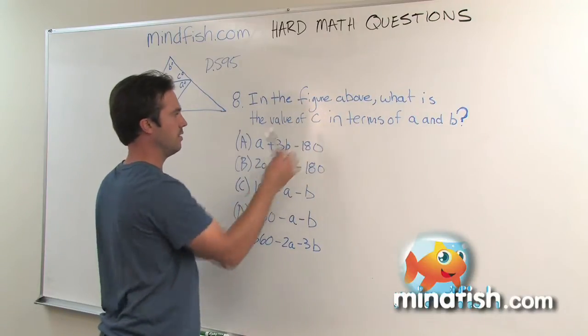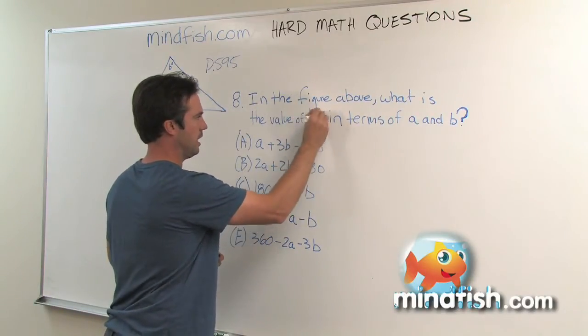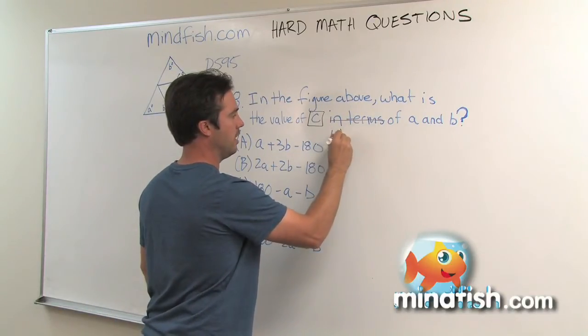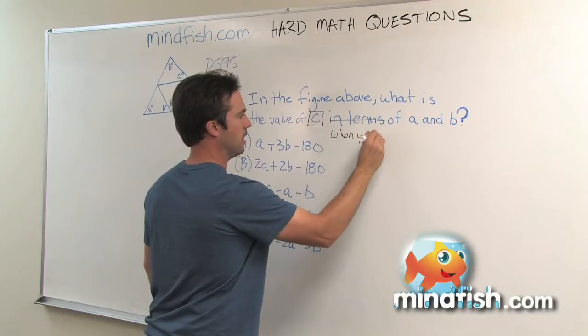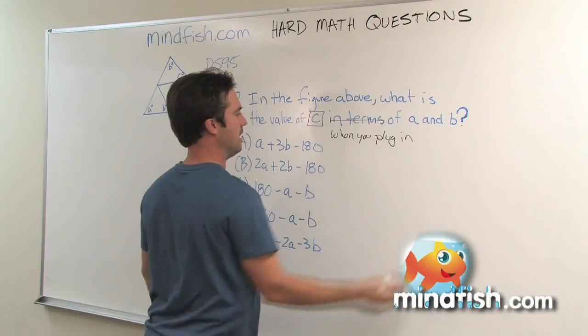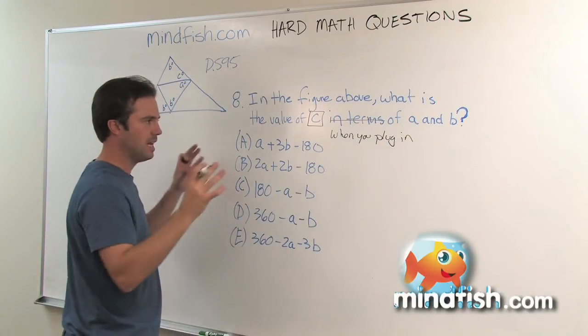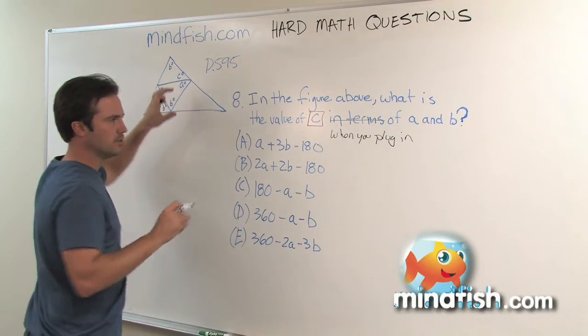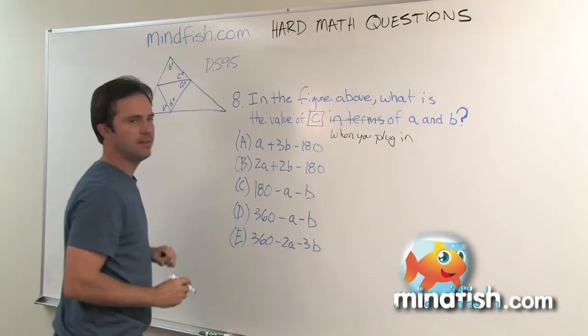So the first step in this is understanding the kind of terminology of the question. In the figure above, what is the value of C? So C is what we need in terms of A and B. All in terms of mean is when you plug in A and B. So essentially, what we're going to do is we're going to make an A and a B, we're going to solve for our own C.